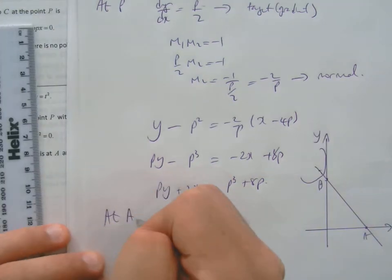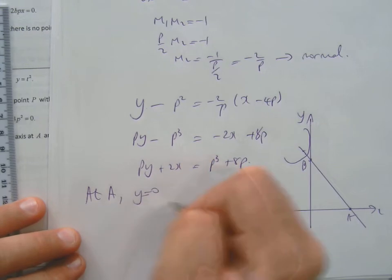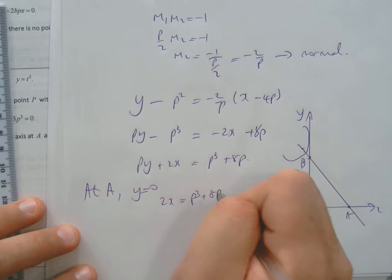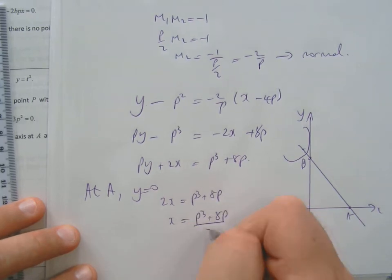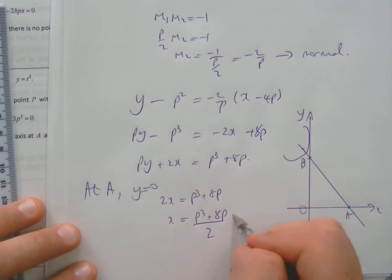At A, on the x-axis, y is 0. So that means 2X will equal p cubed plus 8p, so X will be p cubed plus 8p over 2. So we can say this is equal to OA. This distance O to A is equal to that.